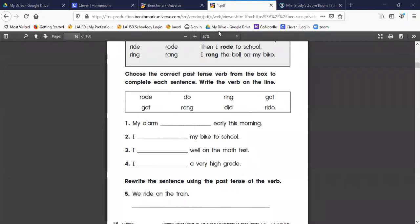Number one says: my alarm blank early this morning. So that's in the past tense. What does an alarm do? It rings. So in the past tense we are going to say rang, R-A-N-G. I'm just gonna cross that one out.